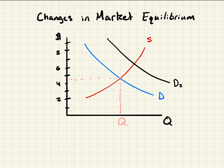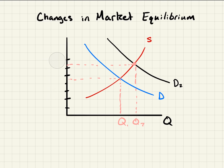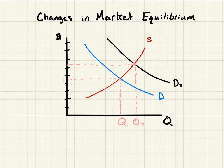Q1. With this increase in demand — people's tastes and preferences for this good or product increase — it's going to shift demand out. There's going to be a change in demand. This is going to have a new equilibrium price and a new equilibrium quantity. We can call this P1, even though we know it's about $5. So we have an increase in price from P1 to P2, and we have an increase in quantity from Q1 to Q2.